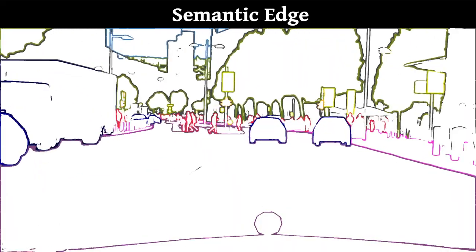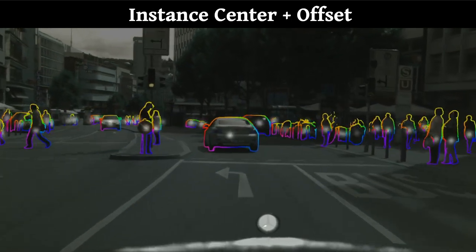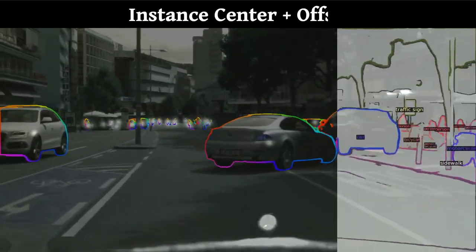Utilizing multi-task learning and a novel fusion strategy, we combine these three subtasks to predict the Panoptic Edge labels for each edge pixel.